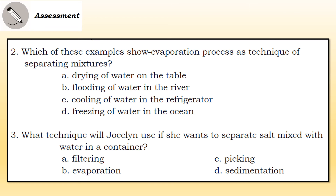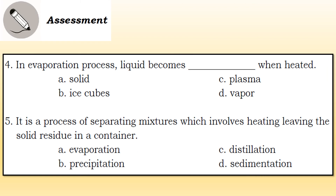Number two: Which of these examples shows evaporation process as a technique of separating mixtures? A) Drying of water on the table, B) Flooding of water in the river, C) Cooling of water in the refrigerator, D) Freezing of water in the ocean. Number three: What technique will Jocelyn use if she wants to separate salt mixed with water in a container? A) Filtering, B) Evaporation, C) Peaking, D) Sedimentation. Number four: In the evaporation process, liquid becomes blank when heated. A) Solid, B) Ice cubes, C) Plasma, D) Vapor. Number five: It is a process of separating mixtures which involves heating leaving the solid residue in a container. A) Evaporation, B) Precipitation, C) Distillation, D) Sedimentation.